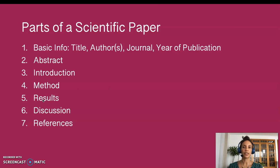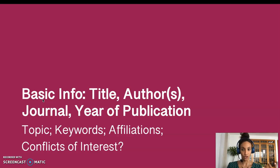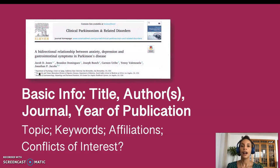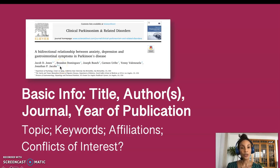What are each of these parts about? Basic information is usually found on the very first page of the article, including the title, the authors, the journal in which it was published, and the year of publication. I have an example here of the very first page of this article, titled A Bidirectional Relationship Between Anxiety, Depression, and Gastrointestinal Symptoms in Parkinson's Disease. The authors are listed here, typically in order of contribution.